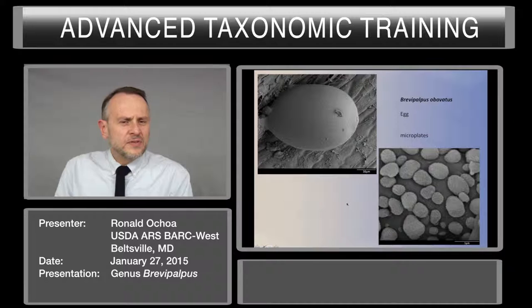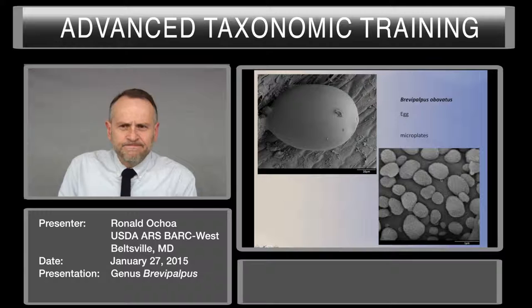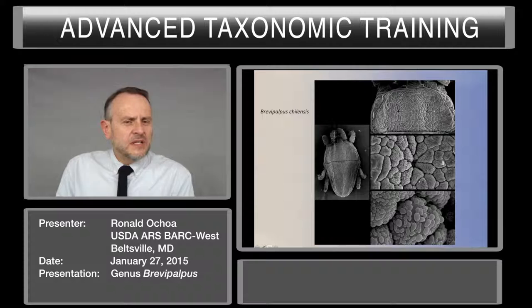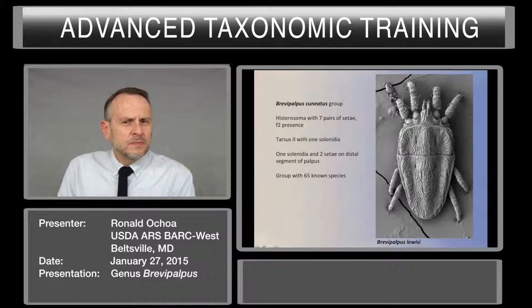You can see here its microplates and the egg. Brevipalpus chilensis is an important species in the group of ovatus. This one is completely reticulated, especially in the central areas. Here we can see the microplates of Brevipalpus chilensis.